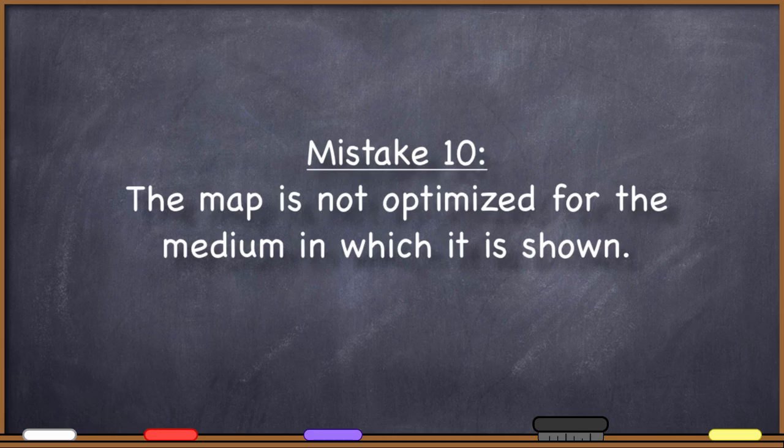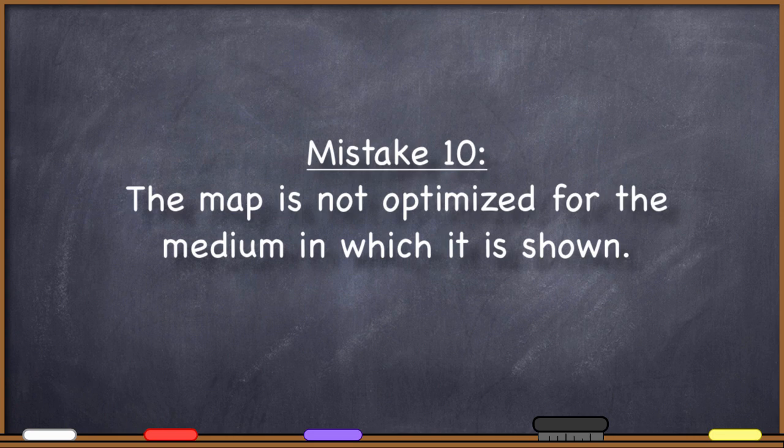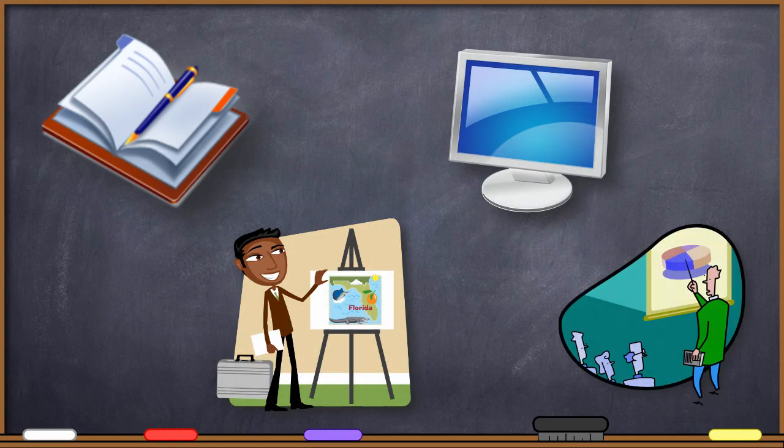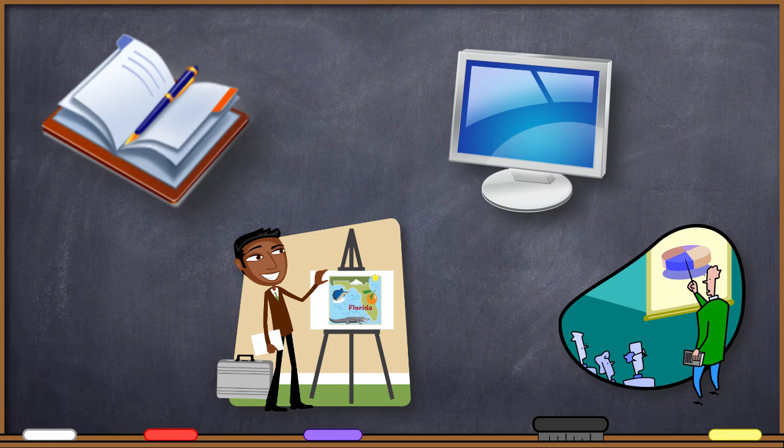And finally, number ten, the map is not optimized for the medium in which it is shown. It is very, very seldom going to be the case that you can use the same map in a print publication, on a poster, on the web, and for a PowerPoint presentation. Unfortunately, you see people all of the time that only have created a single map and are trying to shoehorn it into all of these different circumstances. A map should be designed specifically for the particular medium in which it will appear.